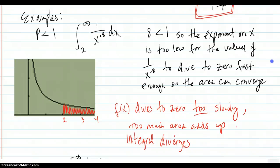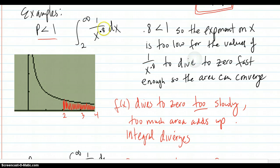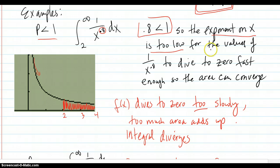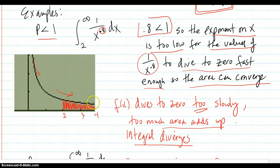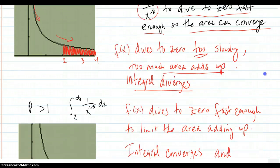Here's an example. For p less than 1, like 0.8, here's your function. It doesn't look like it's diving fast enough to 0. Since 0.8 is less than 1, the exponent on x is too small for the values of 1 over x to the 0.8 to dive to 0 fast enough for the area to converge. Another way of saying that is f of x dives to 0 too slowly — too much area adds up, so the integral diverges. Because this curve takes too long converging down to 0, there's too much area adding up as you go to infinity.